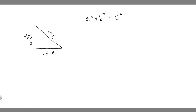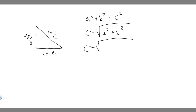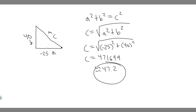If you square root both sides, you get c equals the square root of a squared plus b squared. We know both values, so c equals the square root of minus 25 squared plus 40 squared. When you compute this, you get 47.1699, which is about 47.2 units. They don't really specify the units, so just put units. This is the magnitude.